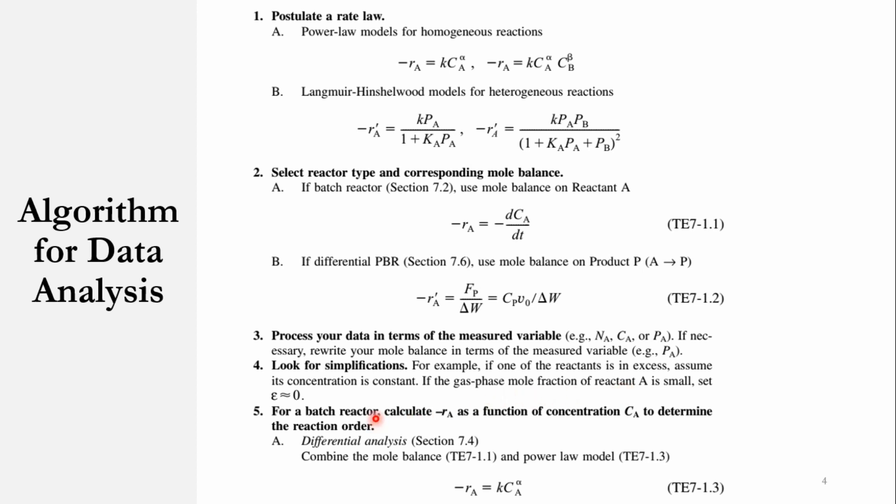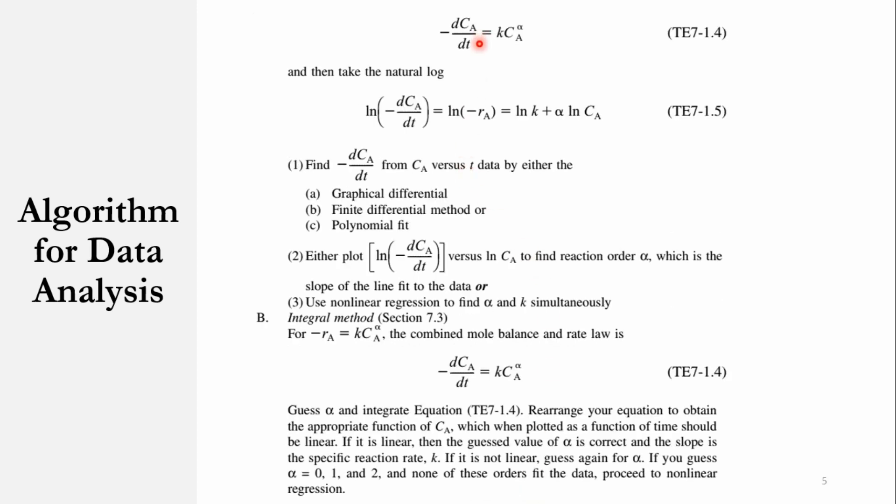The fifth step is that for a batch reactor, we have to calculate the rate of reaction as a function of concentration to determine the reaction order. For this, there are different methods. Number 1 is the differential analysis. That first we say combine the mole balance and power law model, like TE7-1 and TE7-1.3. So combining these, we had already done these steps previously: -rA = k·CA^α, where alpha is unknown. Accordingly, that equation becomes -dCA/dt = k·CA^α. And if we take natural log of it, it will become ln(-dCA/dt) = ln(-rA) = ln(k) + α·ln(CA).